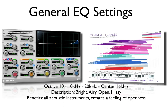And finally, octave 10: 10 kilohertz to 20 kilohertz with a center point of 16 kilohertz. This is going to sound bright, airy, open, and a little hissy. This will benefit nearly all acoustic instruments. It creates a feeling of openness and can really bring acoustic instruments alive.